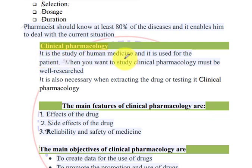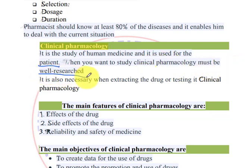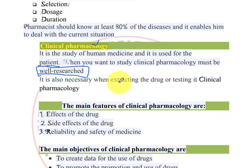Clinical pharmacology is a study of human medicine used for the patient. It is the study of clinical oncology and clinical pharmacology, including how extreme drugs function within clinical pharmacology.